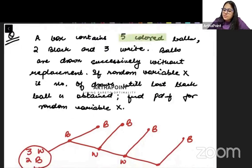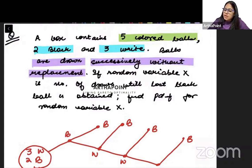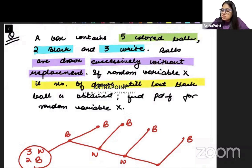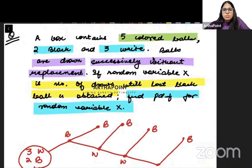A box contains five colored balls, out of which two are black and three are white. Balls are drawn successively without replacement. If the random variable X is the number of draws till the last black ball is obtained, find the PDF for random variable X.